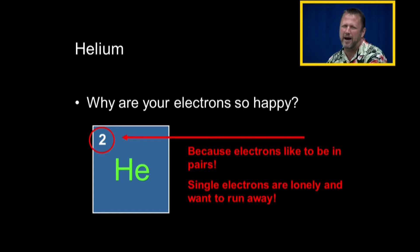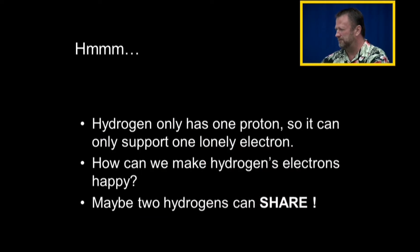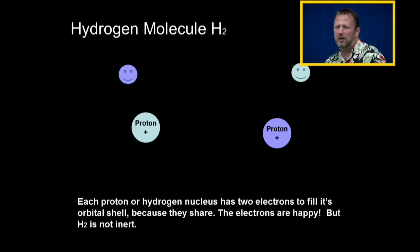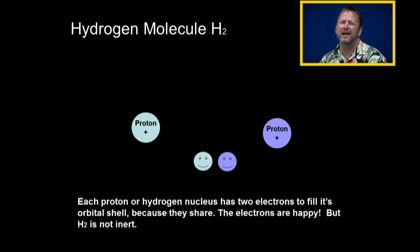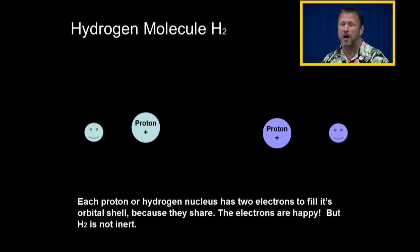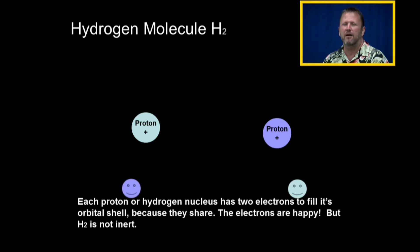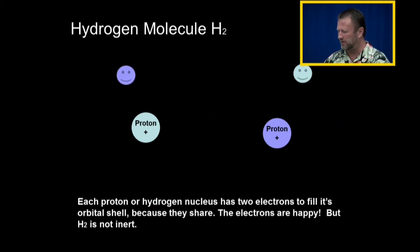Electrons want to be in pairs — single electrons get lonely and want to run away. Hydrogen with its one proton can only support one lonely electron. To make those electrons happy, they can share — like a co-dorm. Here is a hydrogen molecule: H2. Take two hydrogen atoms, stick them together, and the electrons are able to share their orbital houses with each other. The electrons are happy, but that does not make them inert — it makes the hydrogen stable. So now we have hydrogen gas, which is H2.